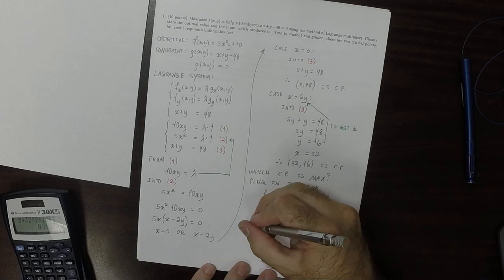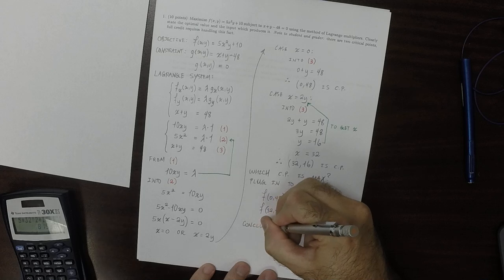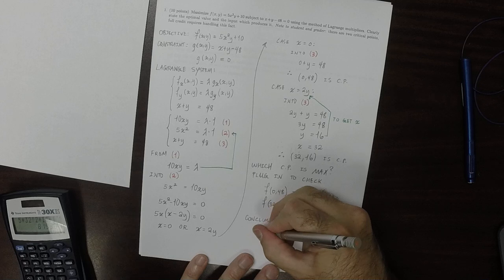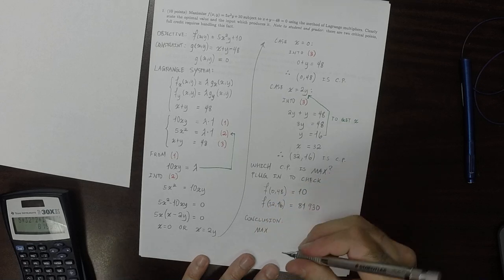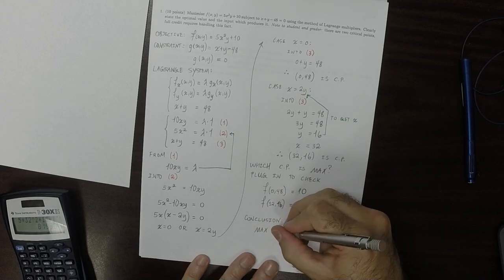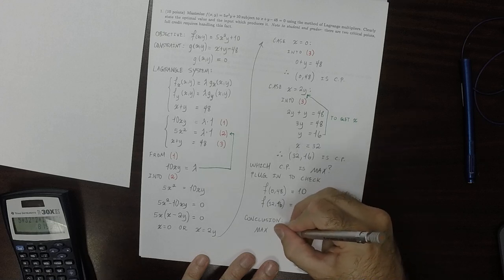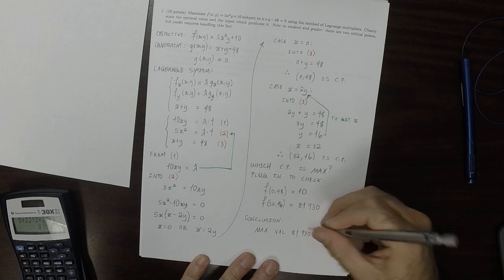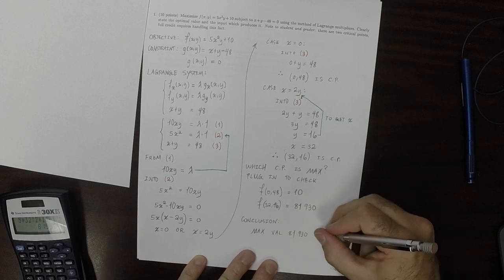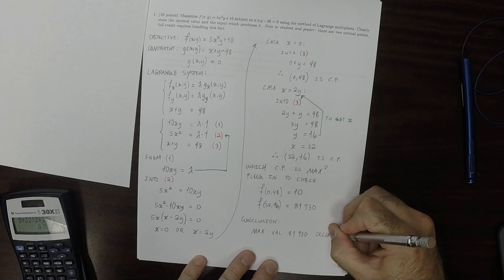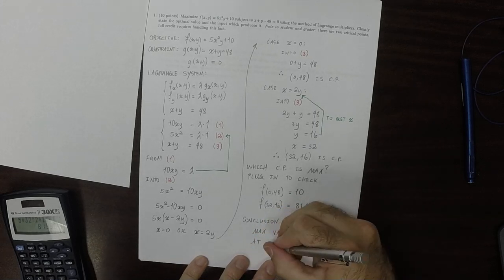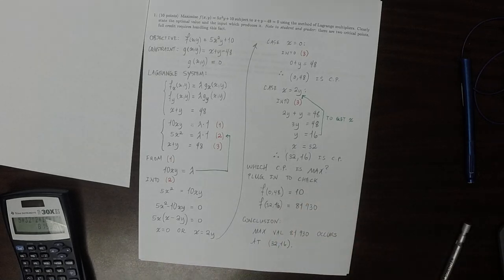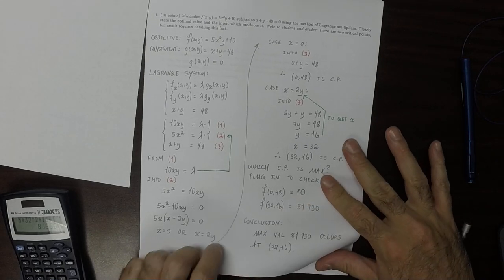So the conclusion is that the maximum value of 81,930 occurs at input (32,16). That's the answer to question one.